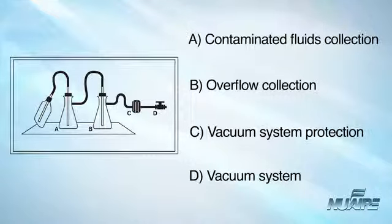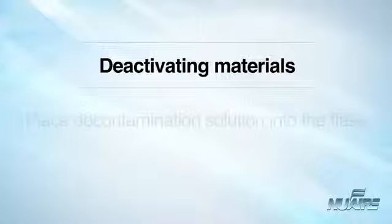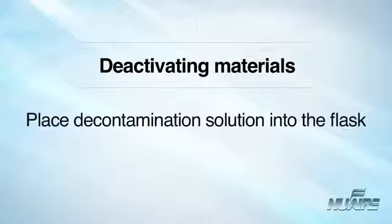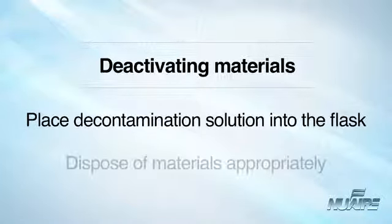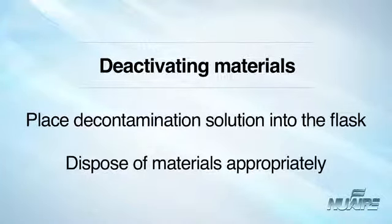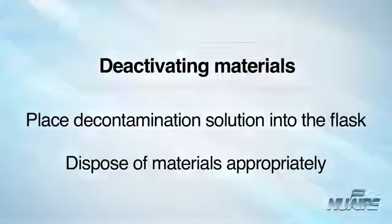This combination will provide protection to the central building vacuum system or vacuum pump, as well as to the personnel who service this equipment. Aspirated materials can be deactivated by placing sufficient chemical decontamination solution into the flask to kill the microorganisms as they are collected. Once deactivation occurs, liquid materials can be disposed of appropriately as non-infectious waste.